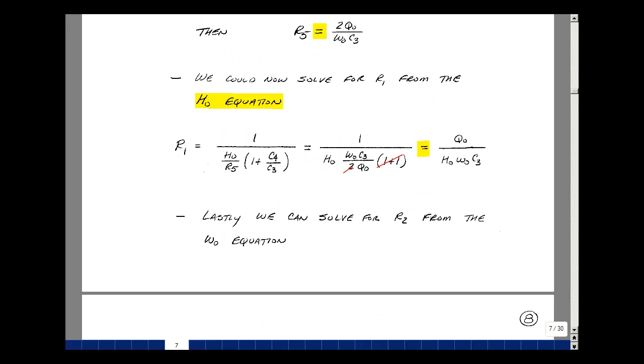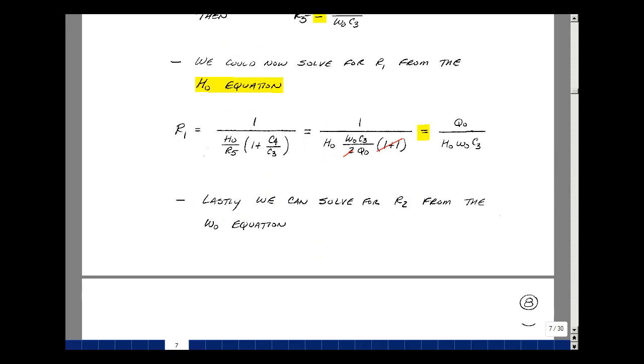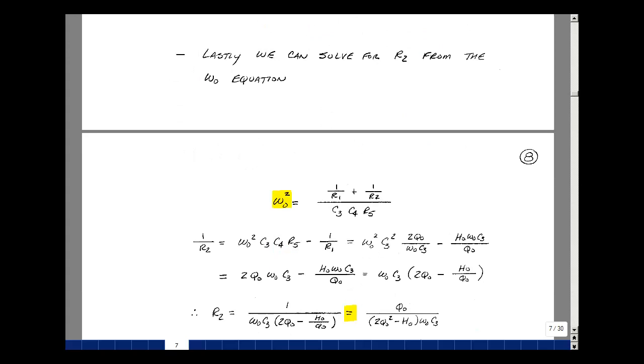Now we have one more component left, that's R2, and take a look at solving for it. Take a look at the equation for omega-naught squared, we have an R2 in there, so we could use that equation to solve for our last resistor R2.